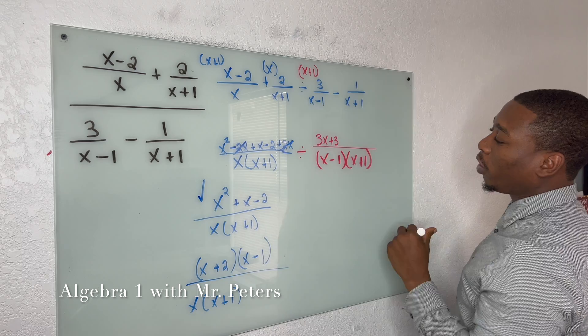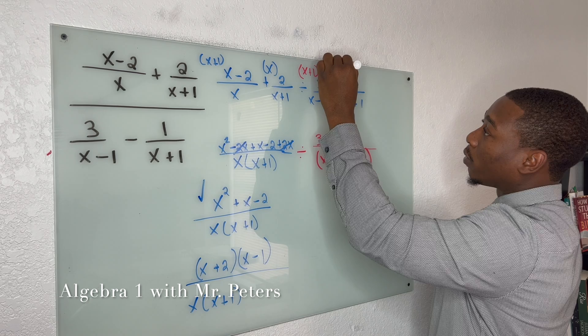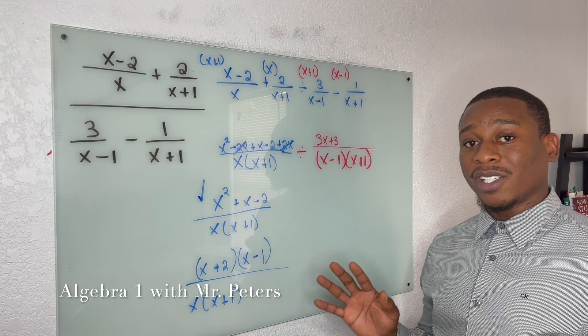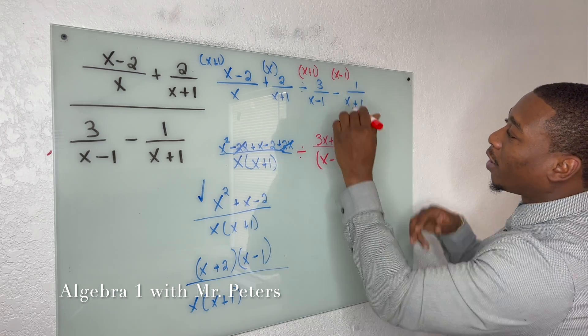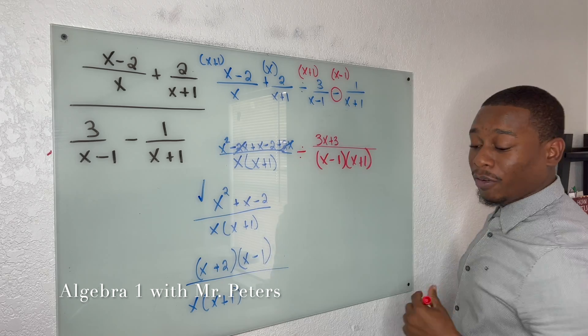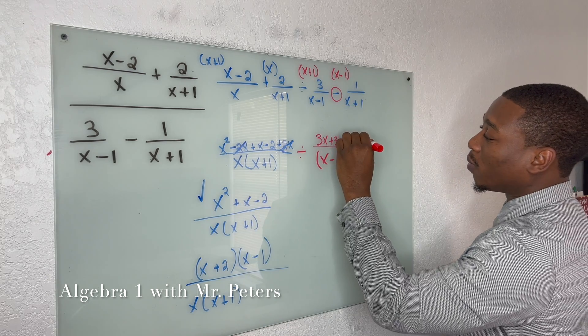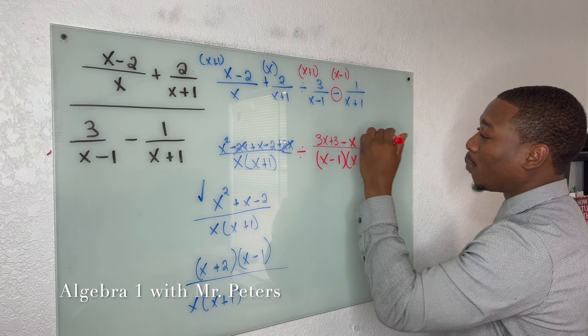And then over here, we're going to multiply this 1 times x minus 1. But it's very important, guys. This is where you could get this problem wrong. Remember that there is a negative sign in front. So we have x times negative 1, which will give me negative x, and negative 1 times negative 1, which will give me positive 1.